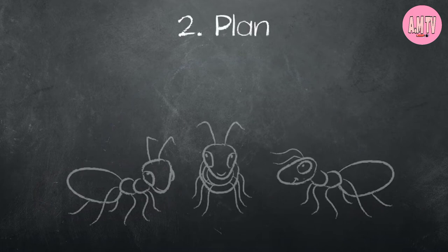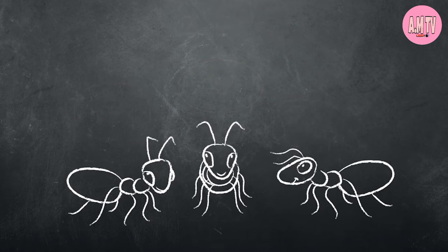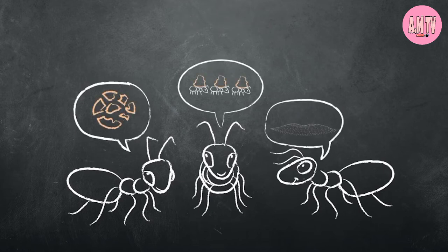The second step is to make a plan for solving the problem. This step includes talking about information and ideas that will be helpful. The ants decide to break the cookie into small pieces and move them into their ant hill.